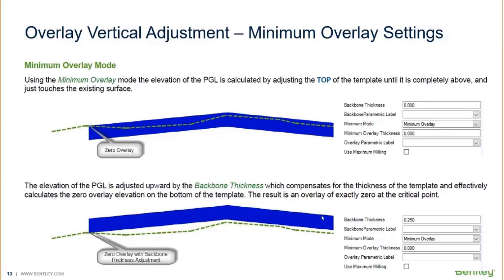From a really basic level, let's say you just set everything down to zero — backbone at zero, minimum overlay thickness at zero, with the minimum overlay mode set. Then the PGL that's going to be calculated will be adjusting the top of the template until it is completely above or just touches the existing surface, finding this zero overlay point. And then if you were to add the backbone thickness in there, it would raise up the template by that backbone thickness at that critical point.